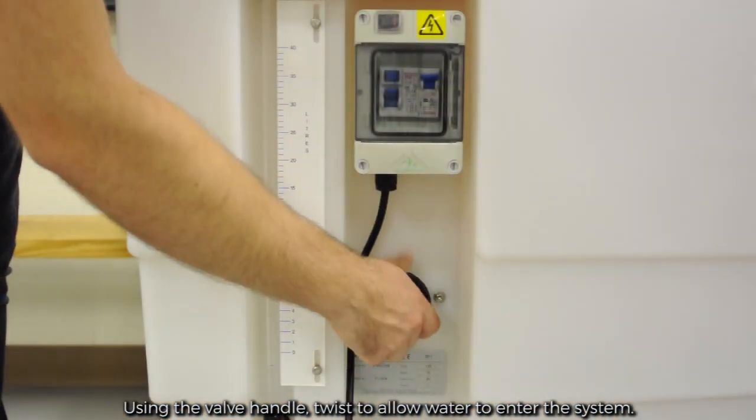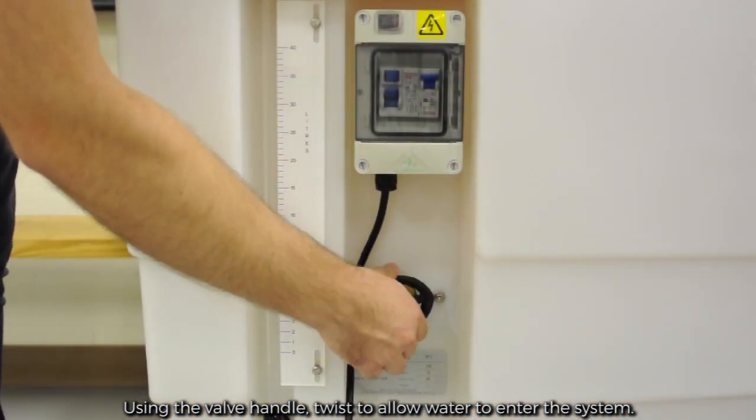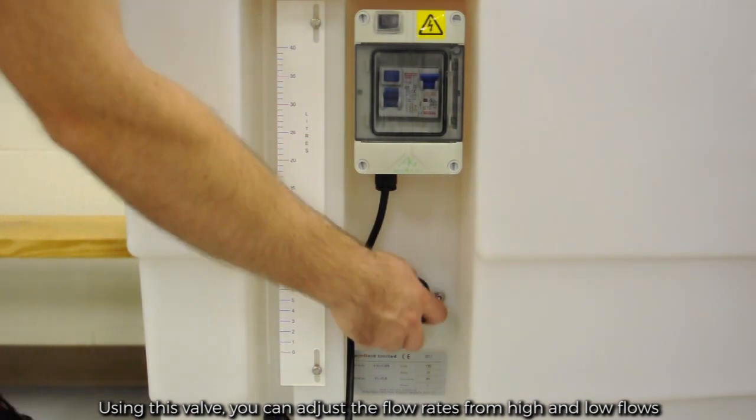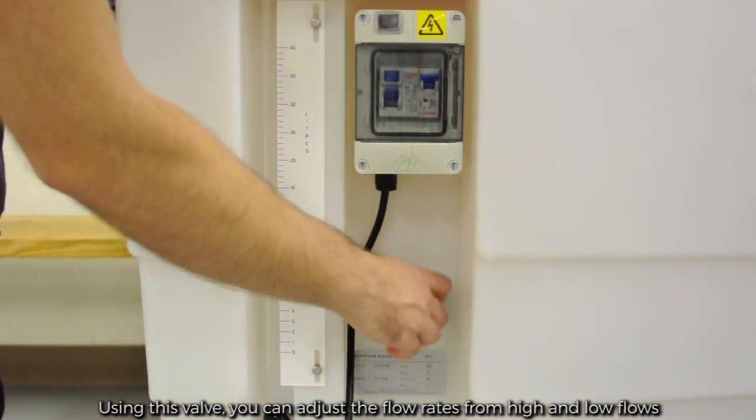Using the valve handle, twist to allow water to enter the system. Using this valve, you can adjust the flow rates from high and low flows.